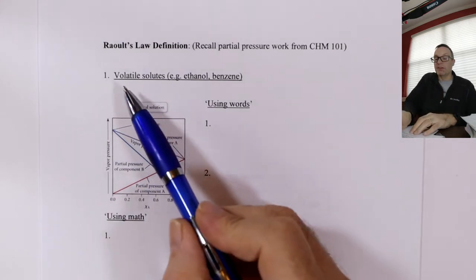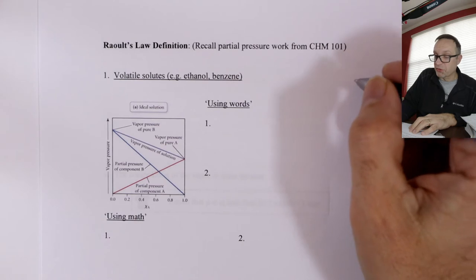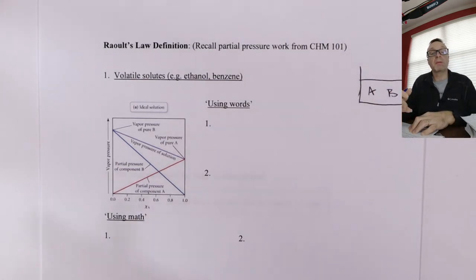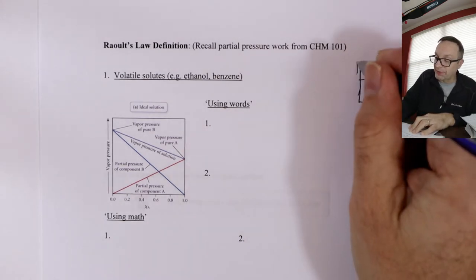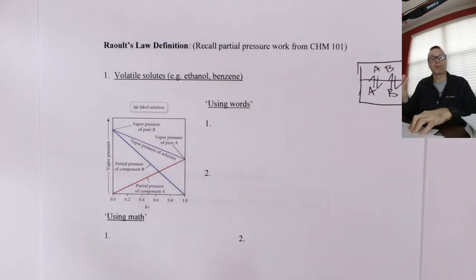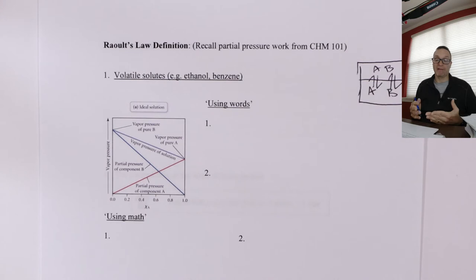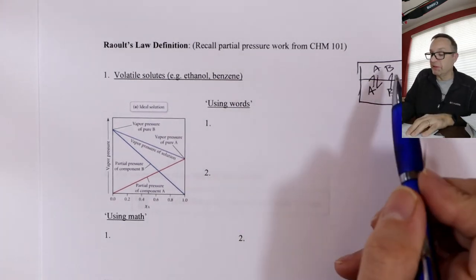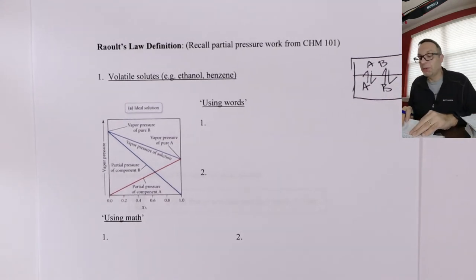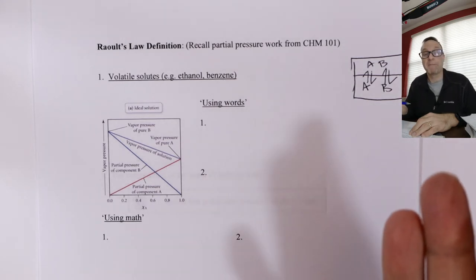We've got a volatile solute and a volatile solvent — both are going to want to evaporate. Imagine a container with molecule A and molecule B, both with low boiling points. We put a cap on it, and they both get into the gas phase above the solution — not just the solvent. So we have a mixture of vapors above a mixture of liquids. Raoult's Law defines how this vapor is formed and what its composition is. Using words: the vapor pressure of a component above a mixture is proportional to its mole fraction and its natural vapor pressure.